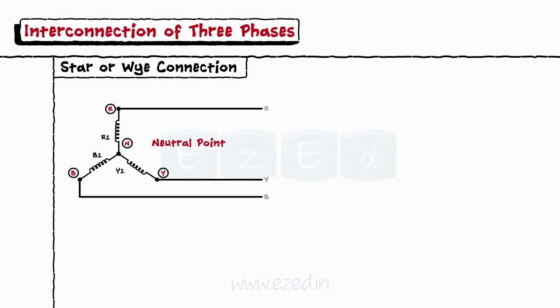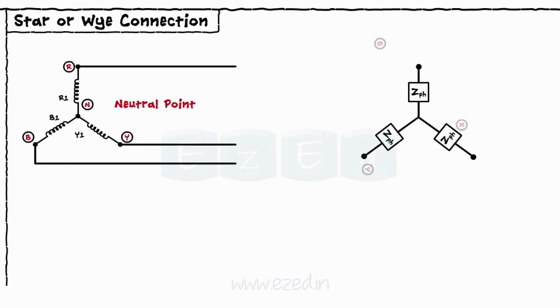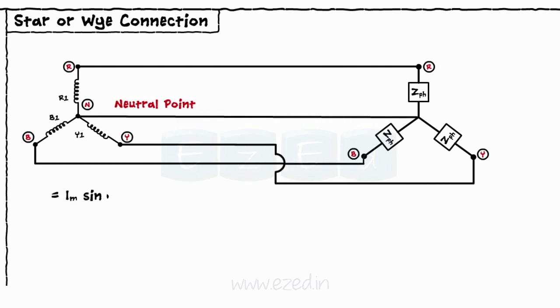When the loads having equal magnitude are connected to the star connection, we get the star connected balanced load system. The line currents have equal magnitude but differ in phase.